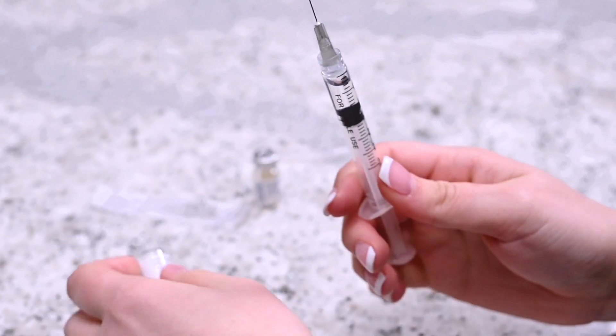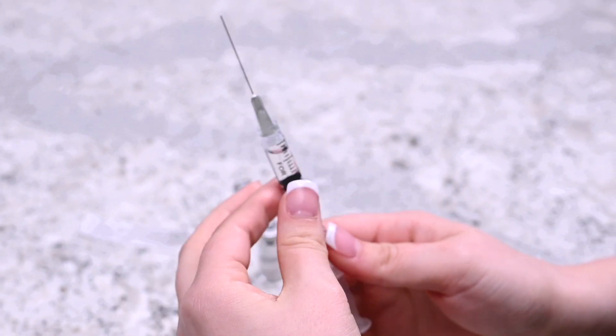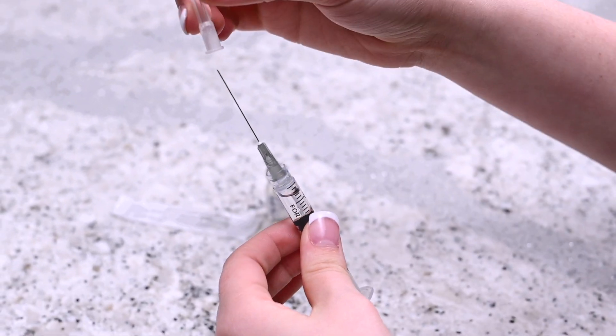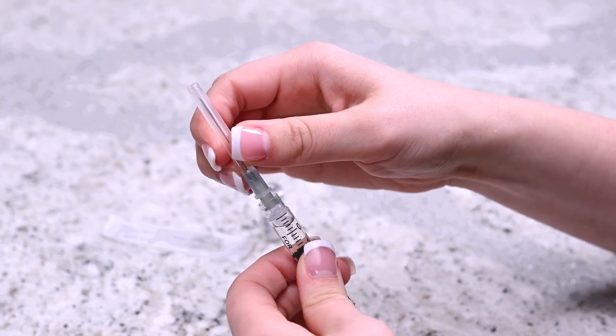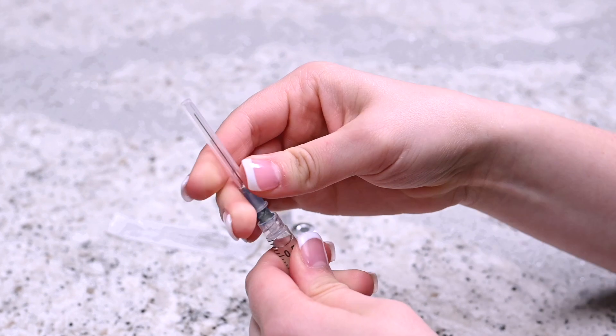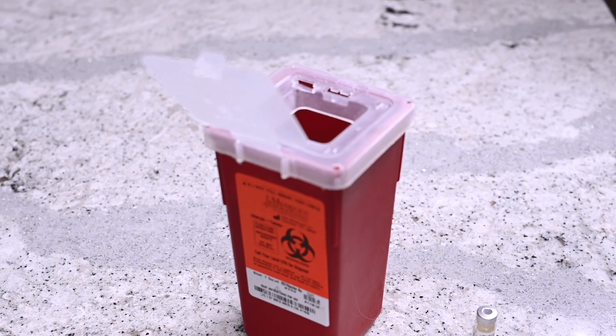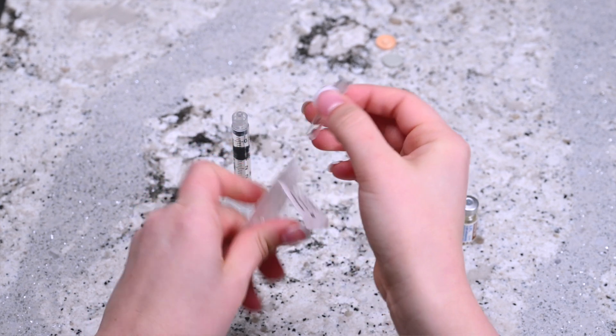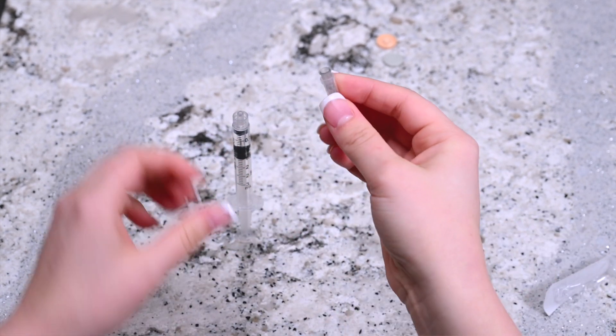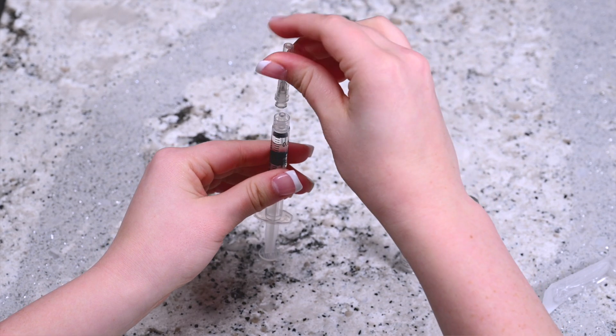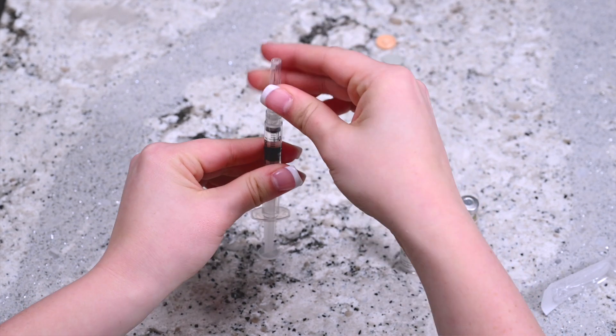Once finished, carefully remove the needle from the vial and recap the mixing needle. Remove the mixing needle by twisting it off the syringe and placing it in the sharps container. Remove the 27 gauge half inch injection needle from its packaging. Twist it into place on the tip of the syringe.